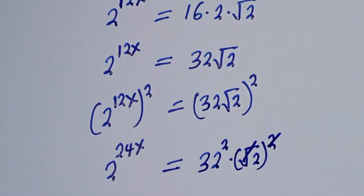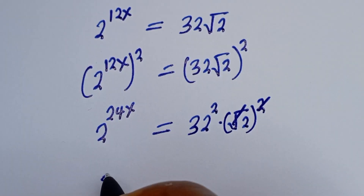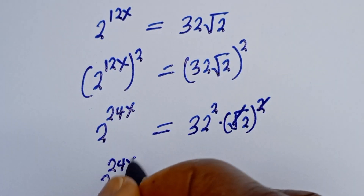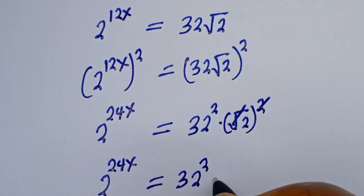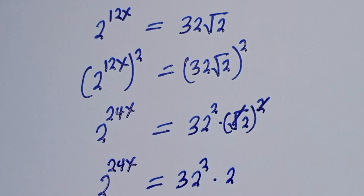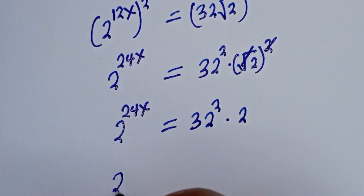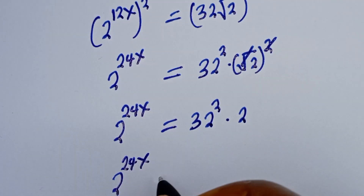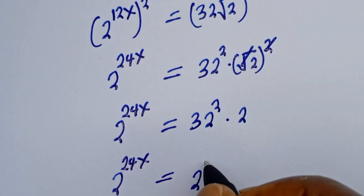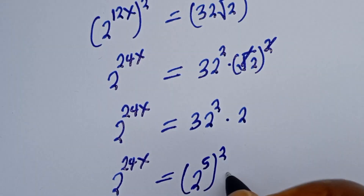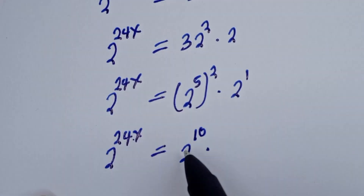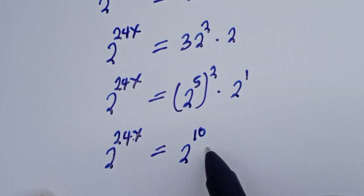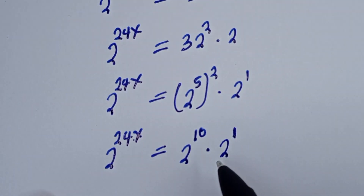So 2 to the power of 24s is equal to 32 squared times root 2. Now 32 can be written as 2 to the power of 5, and root 2 is 2 to the power of 1 over 2. From here, applying the law of indices on the right side.